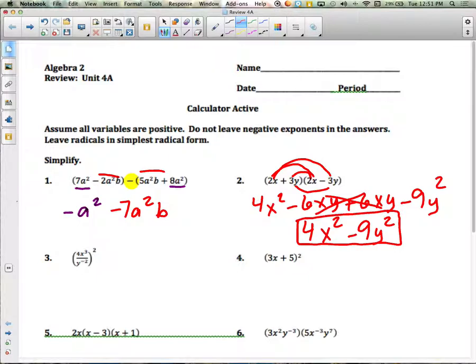And notice that these two things are conjugates. One is plus, one is minus. So when you FOIL them together, the middle term will cancel out. And what you have here is a difference of squares. If you were asked to factor it, you should be able to factor it and take it back to 2x plus 3y and 2x minus 3y.